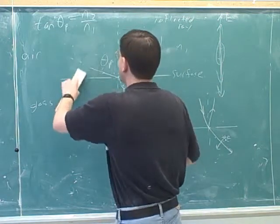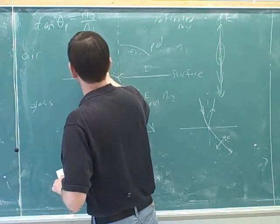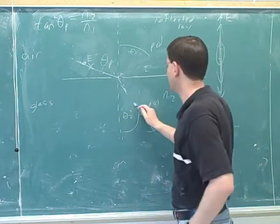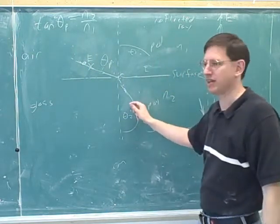All right, and one last example. Let's say that the original electric fields are oscillating into and out of the board. What would the electric fields look like on the transmitted light?